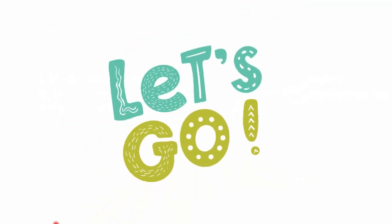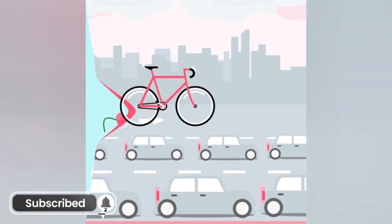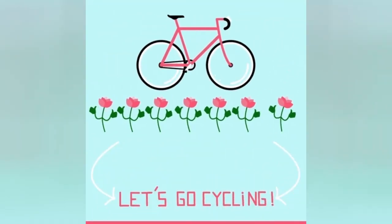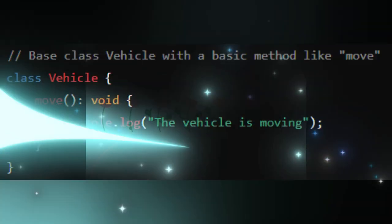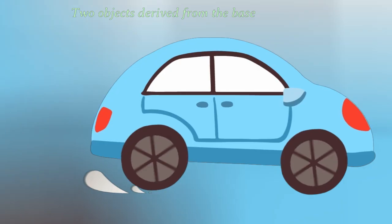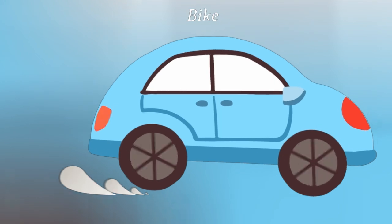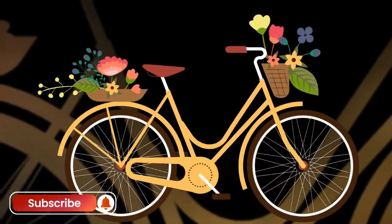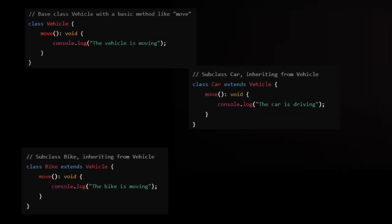Let's discuss with an example. Assume a base object feature like move or drive. This represents the base type with a basic function. Here is the real class example. Two objects derived from the base, for example car and bike, both inheriting the move feature from vehicle. Each subtype has its unique form but keeps the core function unchanged.